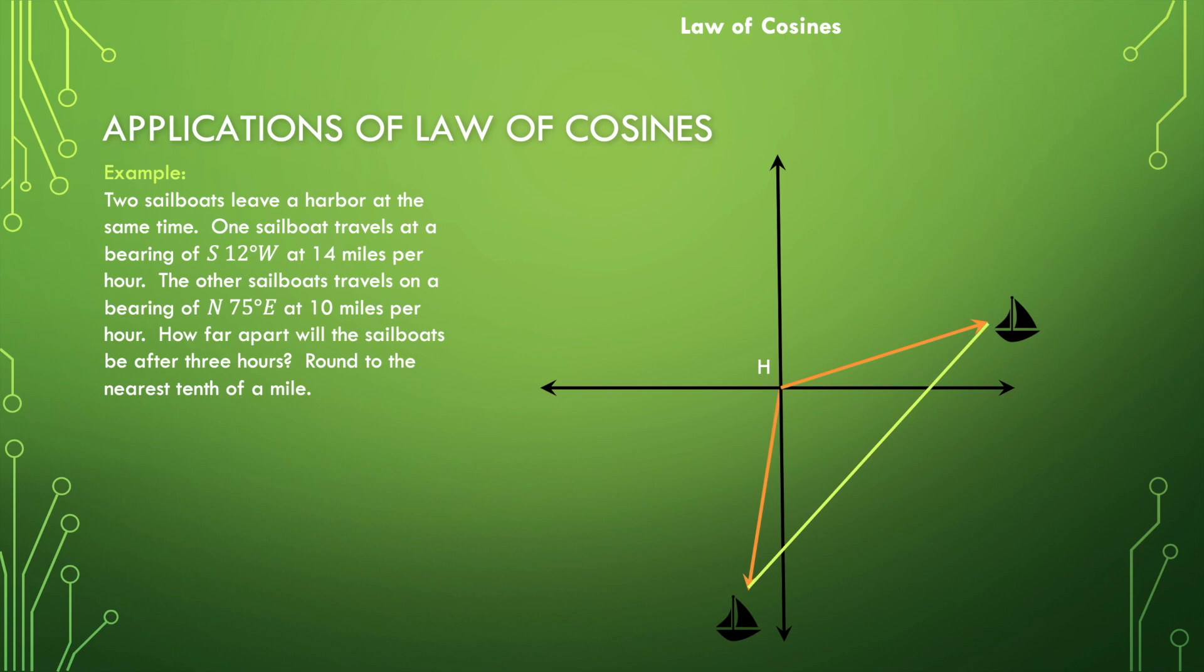Let's concentrate on this first sailboat. We know it's traveling at 14 miles per hour, and it's traveled for three hours. That means for every hour, it's traveled 14 miles. So 14 times three gives us the distance traveled, which is 42 miles.